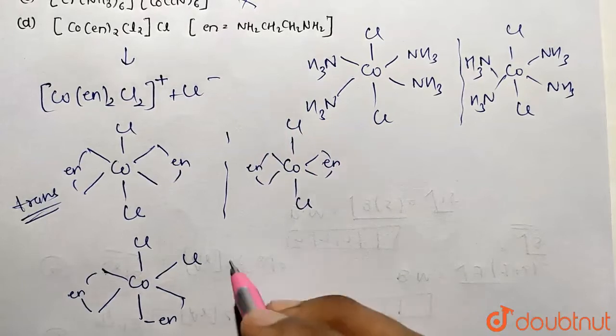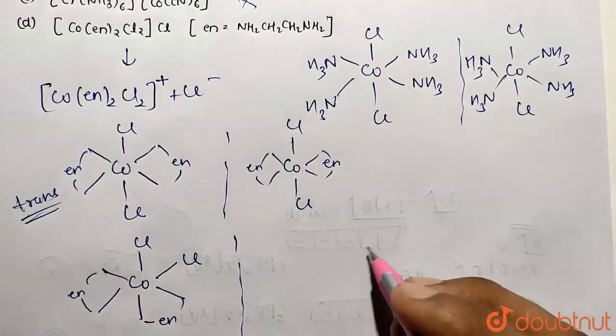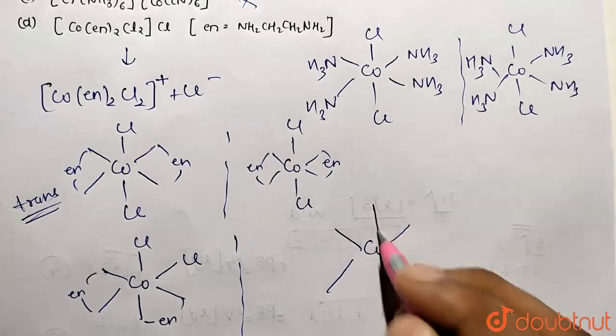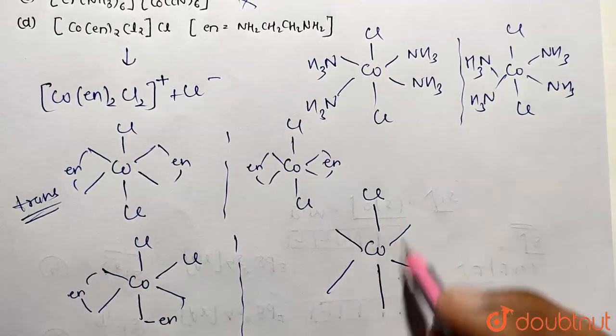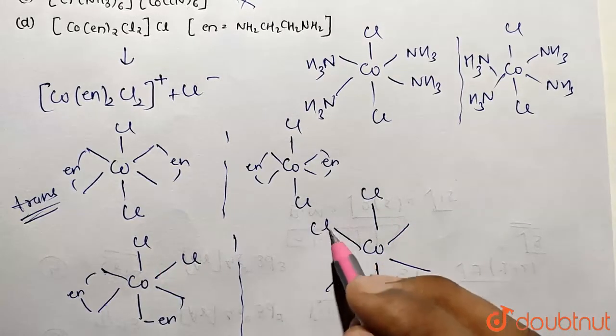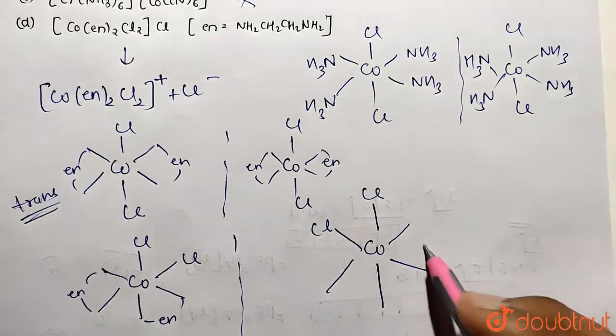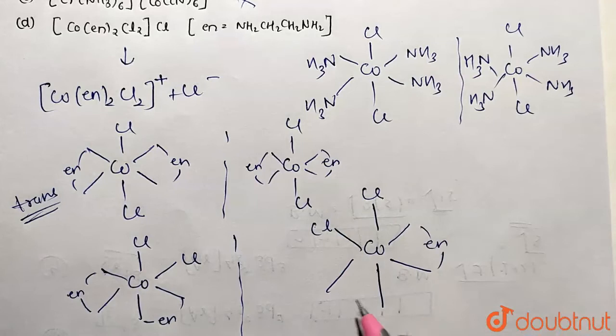Now if I draw the mirror image of this compound, so it's going to be cobalt and occupying mirror image. How? This Cl will be adjacent here; this right thing will be transferred to the left side and this left side will be transferred to right side. That's how we are going to construct the mirror image.